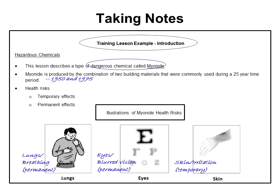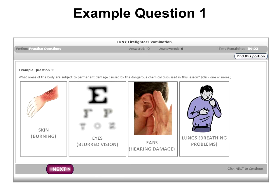Next, we will look at the types of questions you will see on the actual exam. Example Question 1. Some of the exam questions require you to click on one or more pictures to give your answer. This is an example. Remember, it might take choosing more than one answer in order to get full credit on the question. The question asks: What areas of the body are subject to permanent damage caused by the dangerous chemical discussed in this lesson? Click one or more.